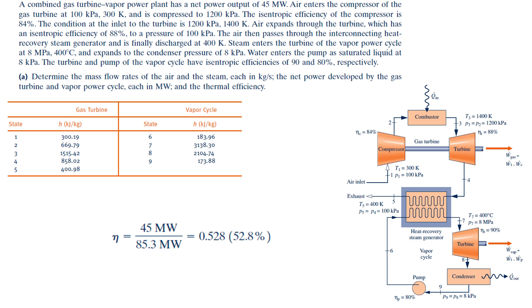Before choosing a combined power plant over a standalone gas or vapor power plant, engineers must account for several considerations: economic factors including cost analysis, the supply and demand of electricity or power required, and possible location restrictions—for example, the relative mobility of gas power plant subcomponents. These are the key considerations a power plant engineer must evaluate before deciding which plant configuration to prefer.